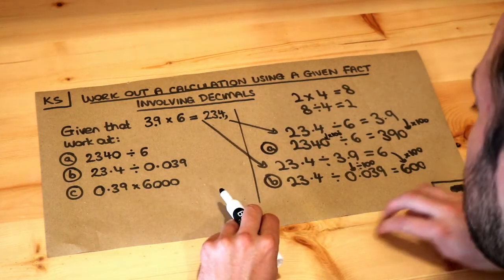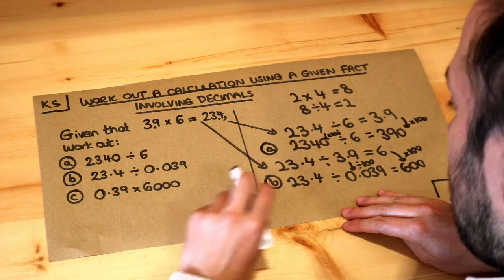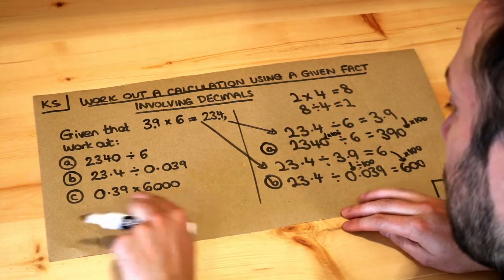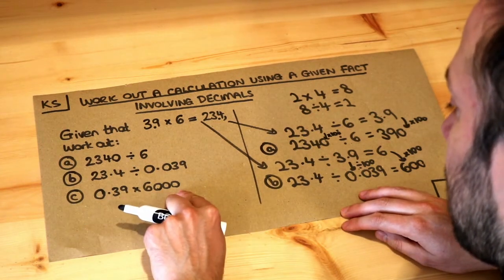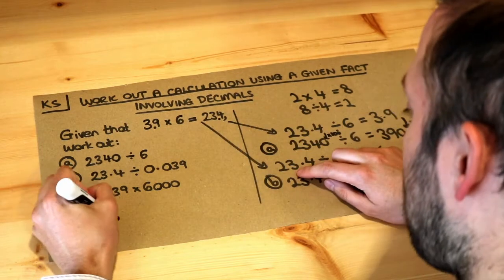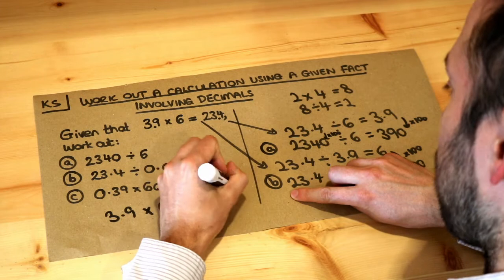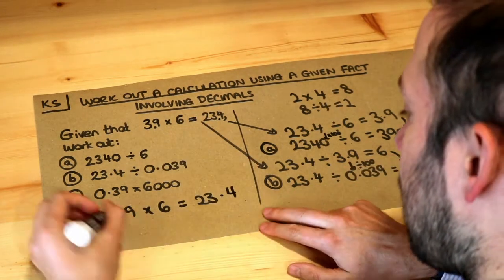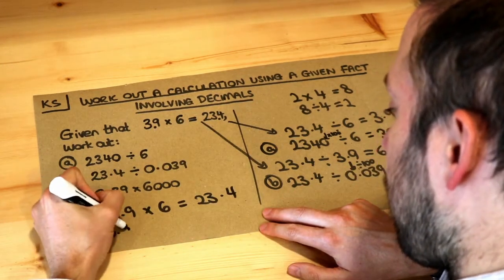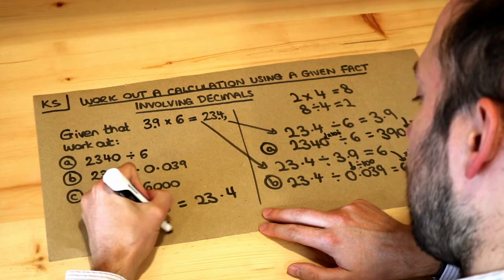And then the last one, C. Now I'm running out of space, so I'm going to have to do it down here. We've got 0.39 times 6,000. Well, let's copy this out again. 3.9 times 6 is equal to 23.4. We know that's true because that's what we're told.